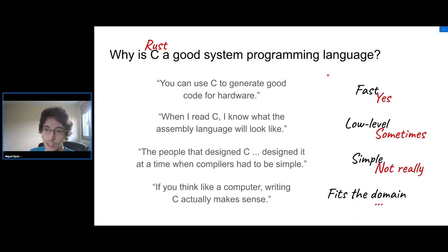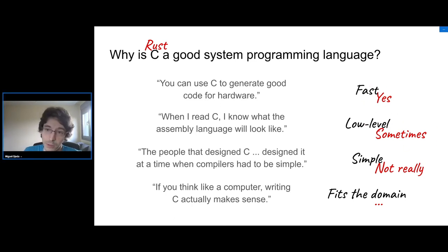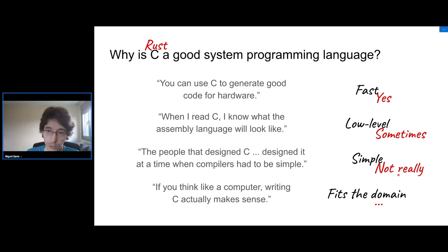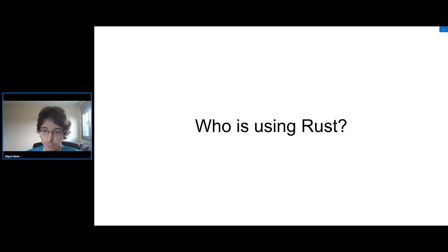Comparing Rust to C: Rust is fast, it is low level — sometimes you can map things to assembly, sometimes not, depending on the code — it's not simple like C, and for kernels and embedded systems it does fit the domain.